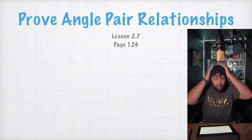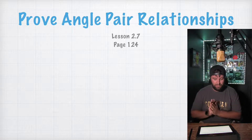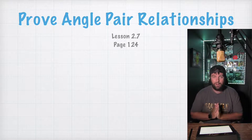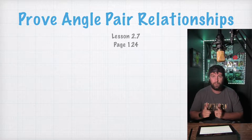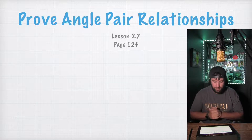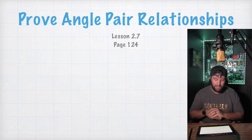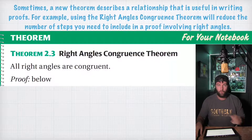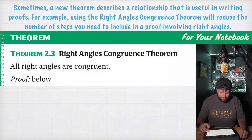All right, guys. So today's lesson, lesson 2.7, is going to be Prove Angle Pair Relationships. This is lesson 2.7. If you're in the book I'm working out of, page 124. Okay, let's go ahead and get started.